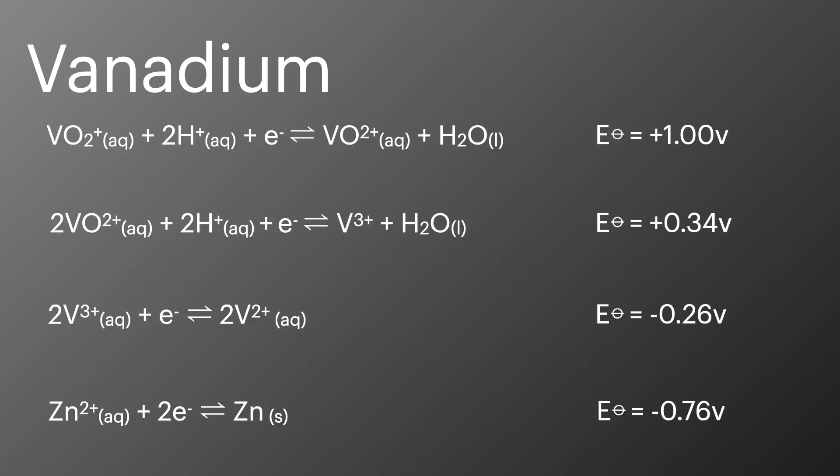To show that zinc is a strong enough reducing agent we can look at the electrode potentials. Zinc has the most negative electrode potential of all the half equations shown here and therefore will always be placed on the left hand side of an electrochemical cell. This means it will have its reduction reaction reversed to an oxidation process which will provide electrons for the reduction of vanadium species we've seen in the full equations previously.